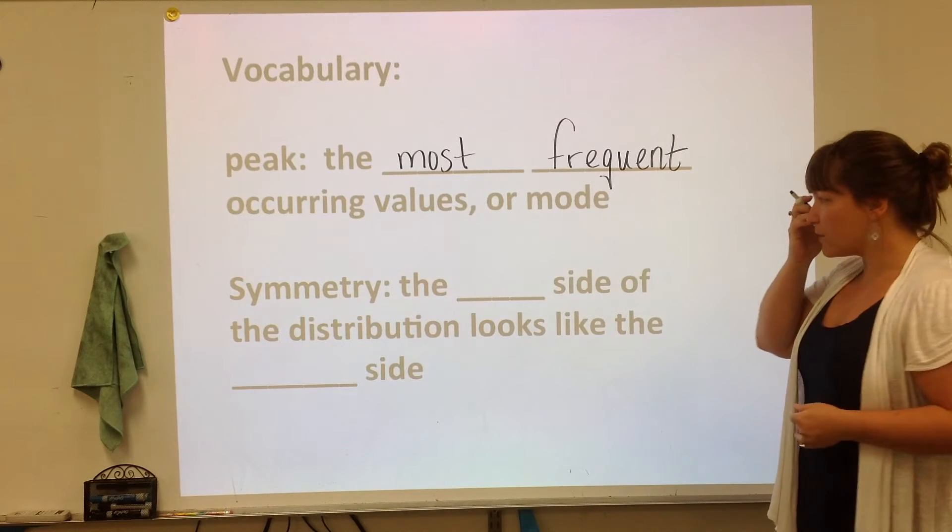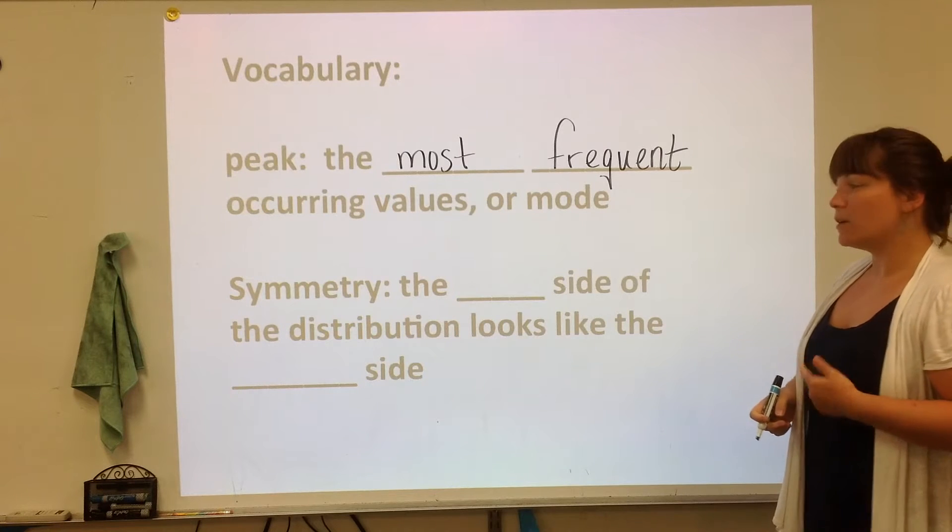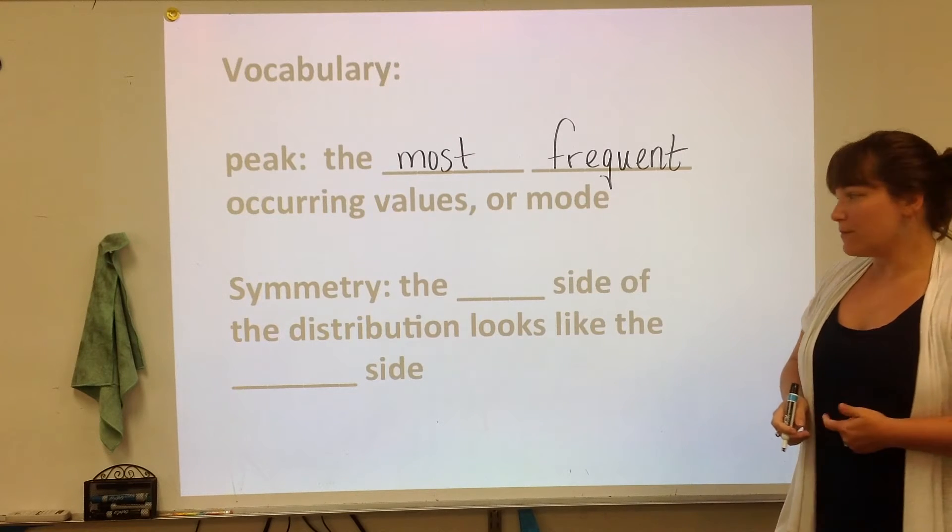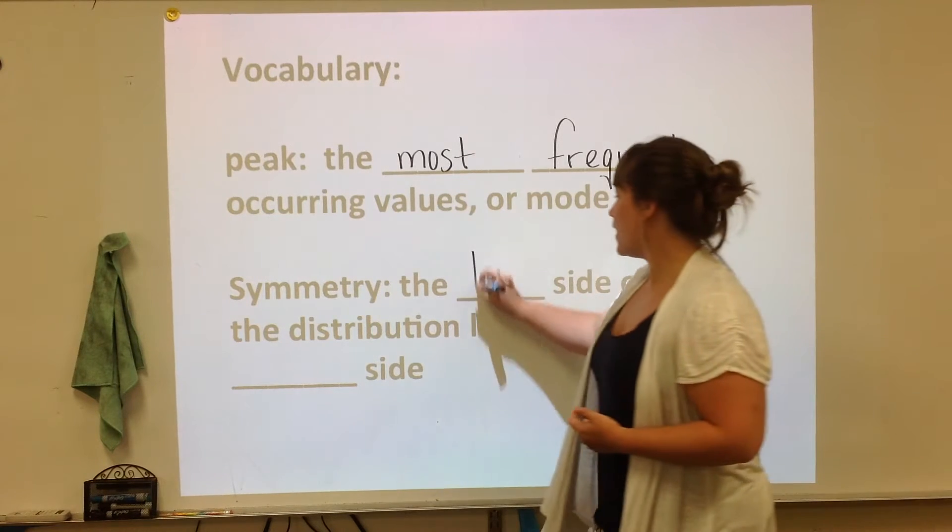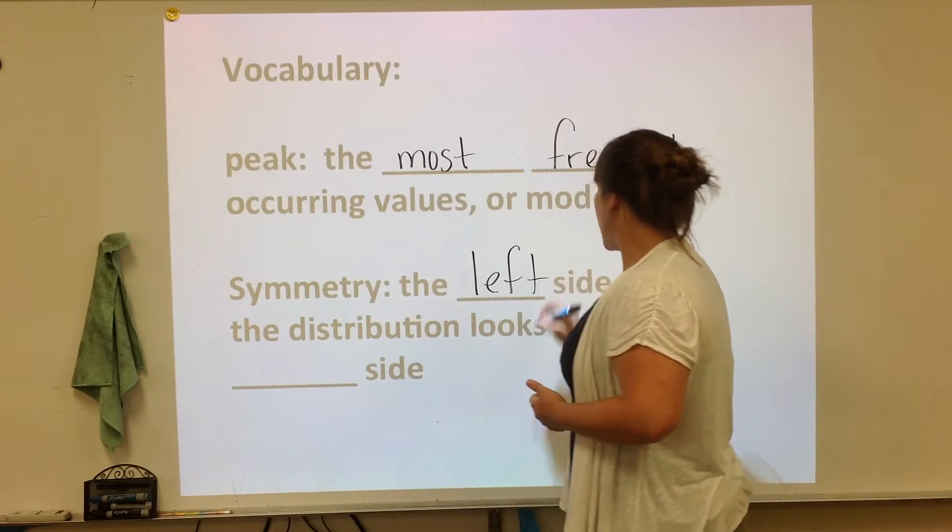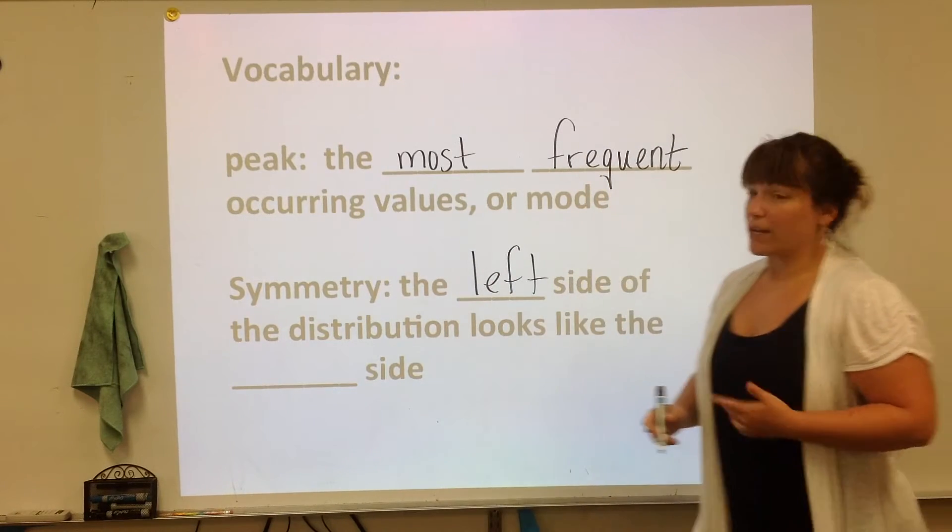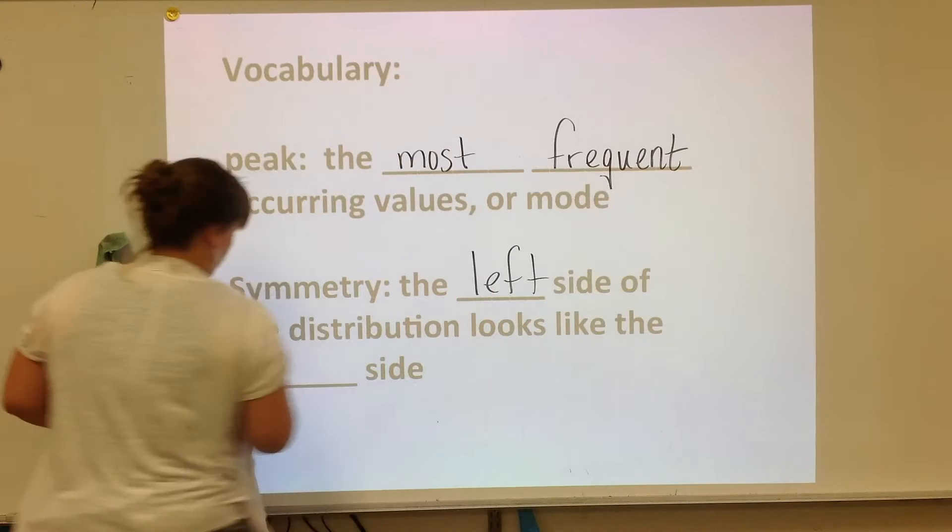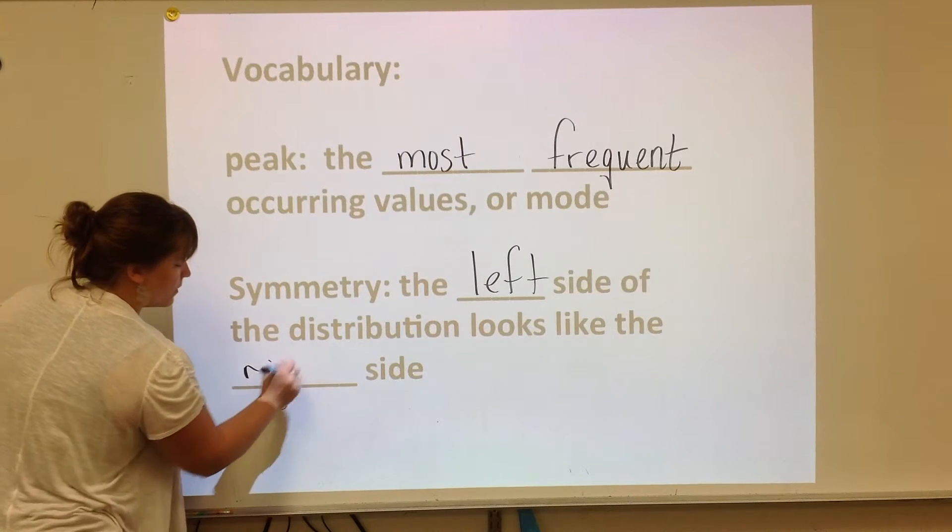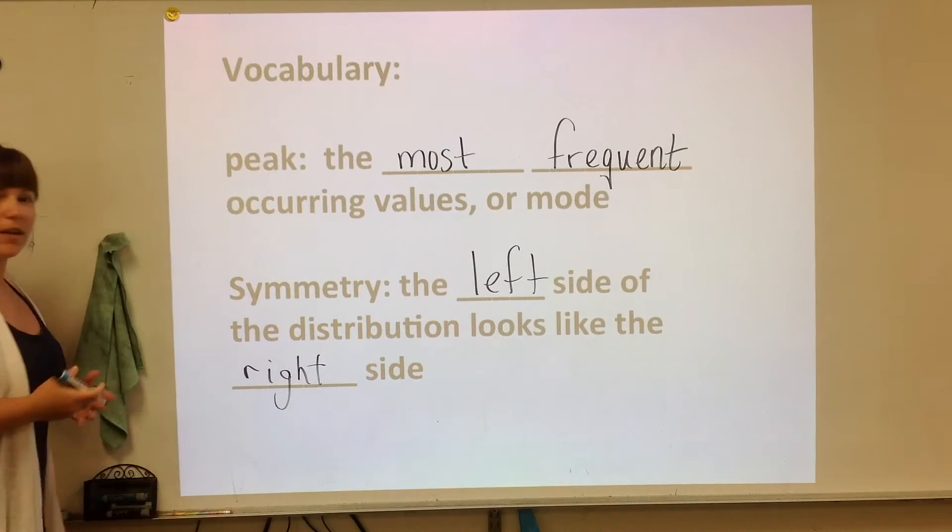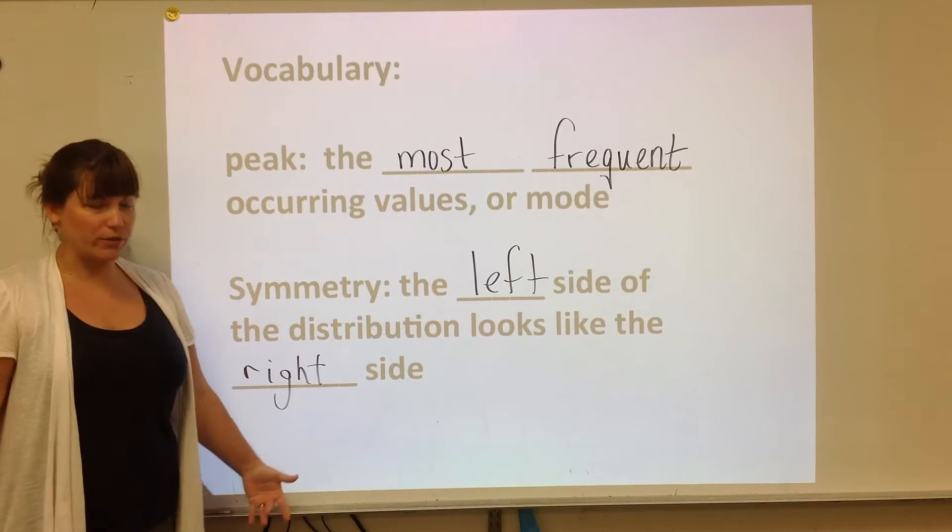The last word is called symmetry. Symmetry is when the left side of the distribution looks like the right. You could fold it in half at the middle point, and the data would match on either side.